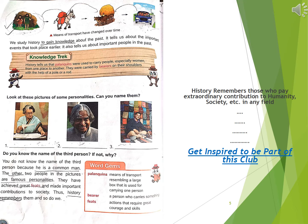Look at these personalities — are you able to identify them? Yes, you can easily identify the first one and the second one. The first one is the late Prime Minister of India, Mrs. Indira Gandhi, and the second one is the late President of India, Dr. APJ Abdul Kalam. But can you identify the third one? It creates a problem because he is a common man. He did not do any great work or contribution to society, so history does not remember him.